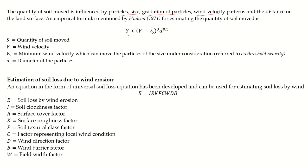As given by Hudson, soil quantity moved is directly proportional to the wind velocity minus the threshold velocity, raised to the power of 3, and the square root of the particle diameter. Similarly, just as we use the Universal Soil Loss Equation (A = R·K·L·S·C·P) for water erosion, we can also estimate wind erosion using a similar equation.